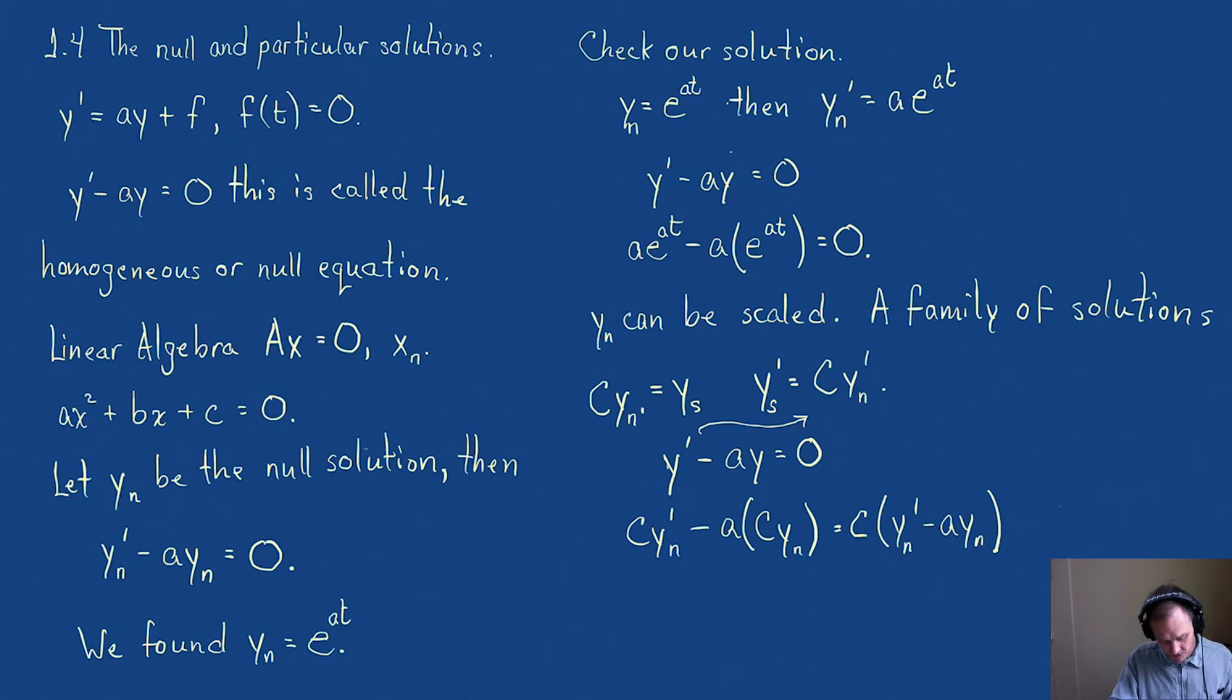But look at this. If this is the null solution, well it is the null solution. Well, then what does that mean? That means it equals zero. So this is just C times zero. In other words, this is zero. So scaling the null solution is also a solution. That's the first half of what we needed, the null solution.